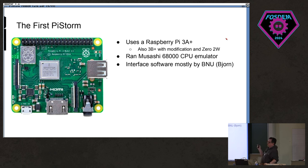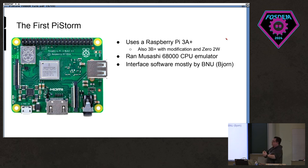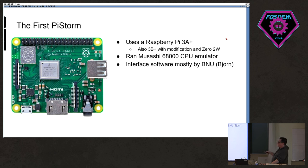We ran the Musashi 68000 CPU emulator — it's a pretty good 68000 emulator. Then there's some glue code to make it work, but it was basically an off-the-shelf emulator. Most of that early software was done by a guy called Bjorn; he's not part of the project anymore, but he did a lot of great early work on it.